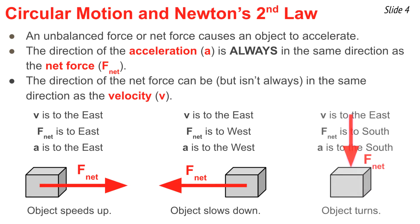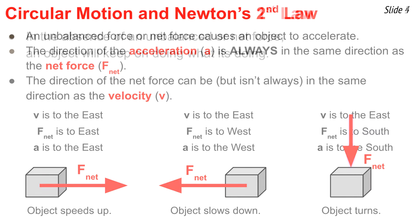In our final case, the force is directed southward on an object that's moving eastward. In a case such as this, the acceleration would be southward. The object would neither speed up nor slow down, but would turn and begin to make a circle.